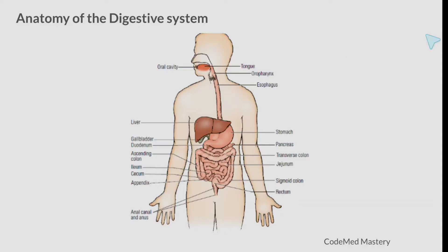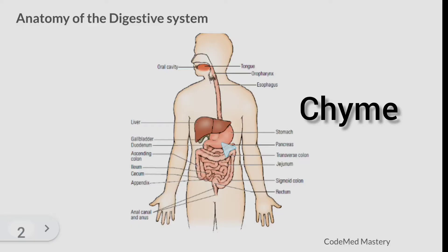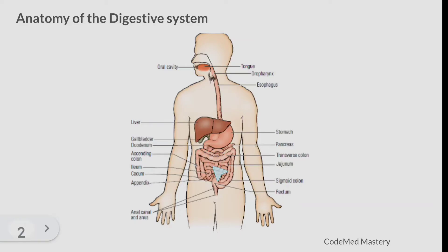The esophagus is a tube about 10 inches long that arises from the pharynx. The esophagus moves food into the stomach by peristalsis. The stomach further digests food received from the esophagus and passes partially digested food — known as chyme — into the duodenum.